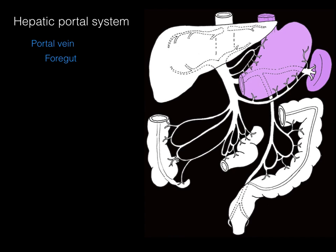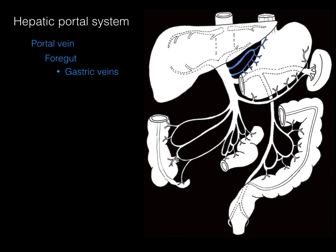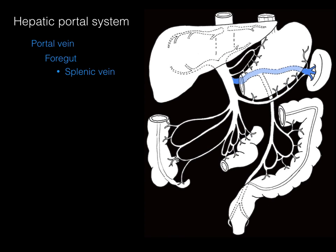The foregut is made up of the distal esophagus, the stomach, the first and second parts of the duodenum, the liver and gallbladder, the pancreas, and the spleen. The veins draining the foregut include the left and right gastric veins, which drain from the lesser curvature of the stomach directly into the portal vein. The gastro-omental (also called gastroepiploic) veins drain to both the portal vein and the splenic vein. The splenic vein drains blood from the spleen, and the pancreatic veins drain from the pancreas into the splenic vein.